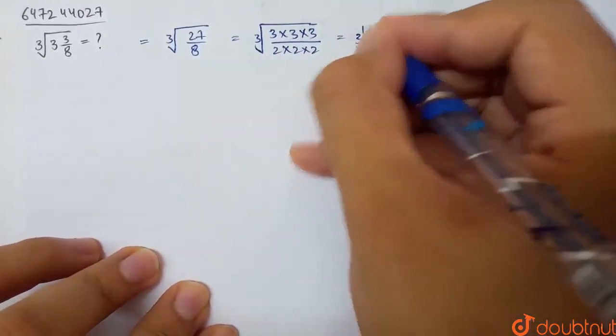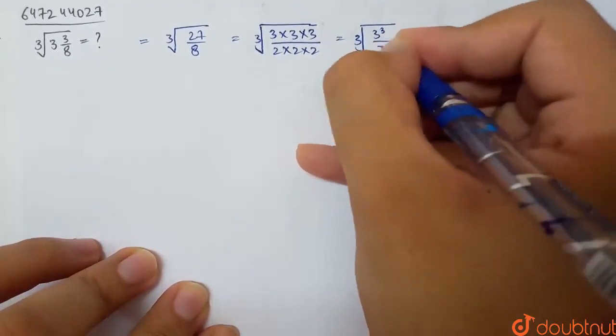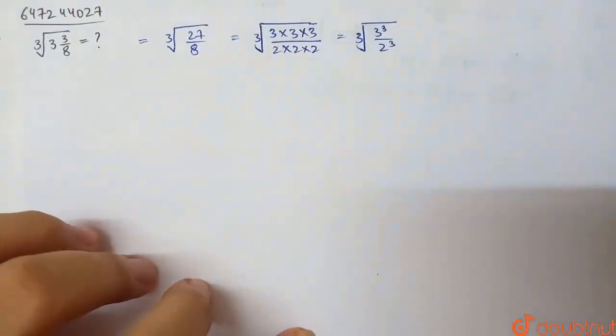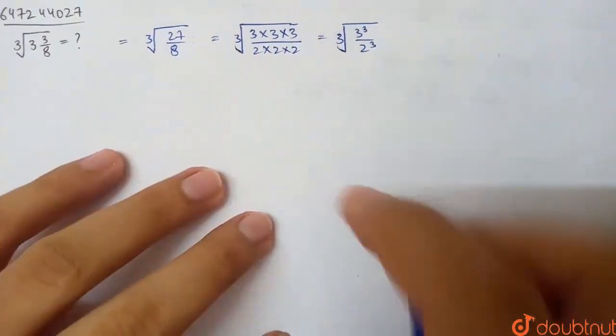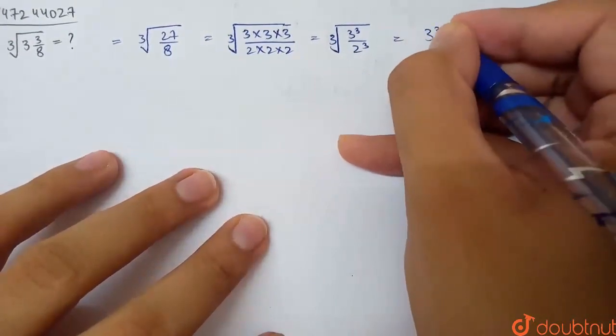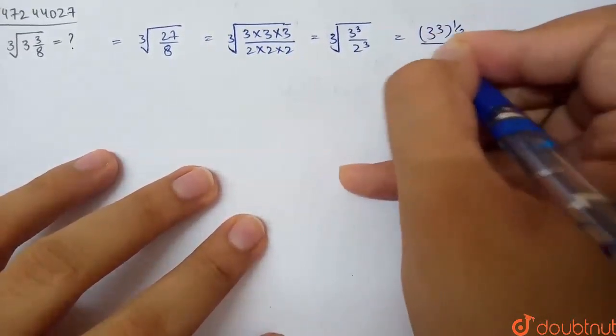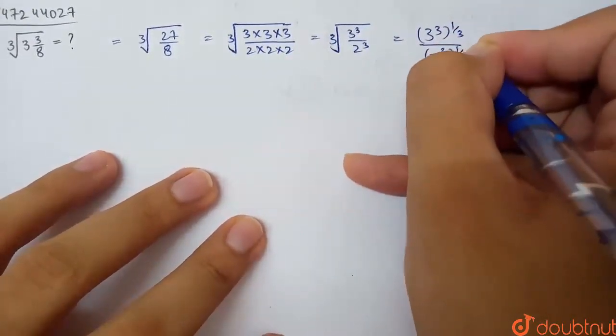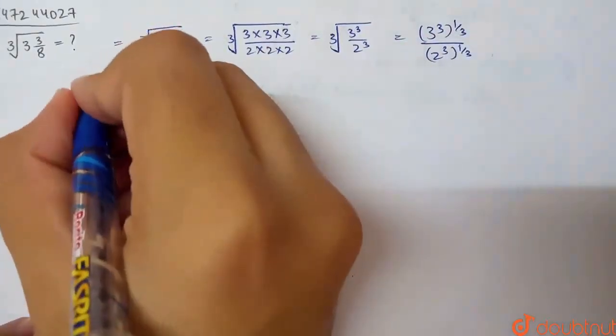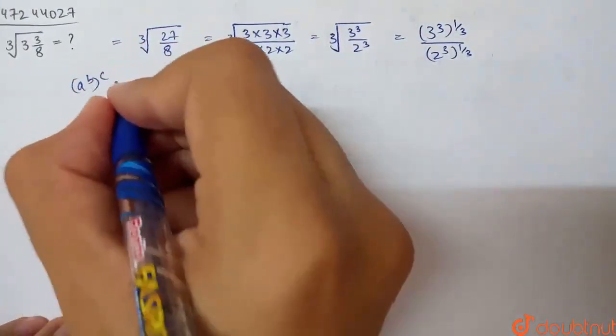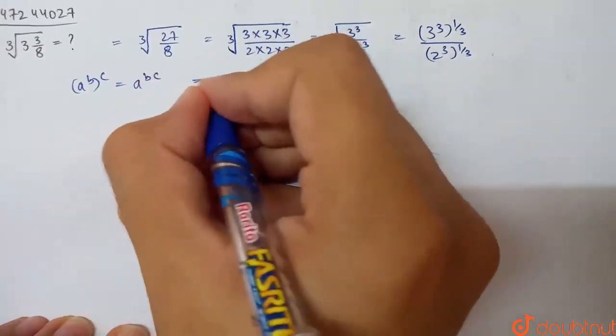This is basically our denominator. So this is the cube root of 3 cubed by 2 cubed. Now the cube root is power 1 by 3. What do we have to do? 3 power 3 whole power 1 by 3 divided by 2 power 3 whole power 1 by 3. Now, A power B whole power C, here we have to multiply A power B into C.